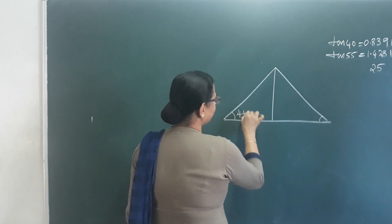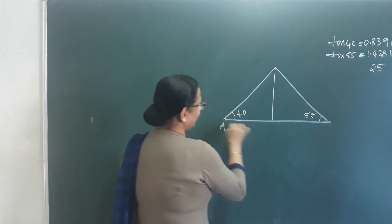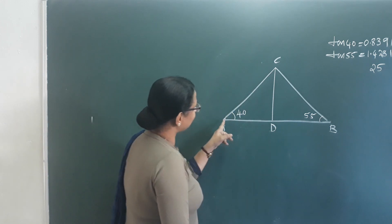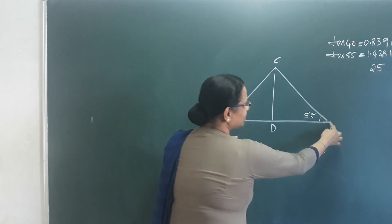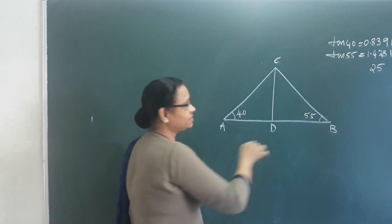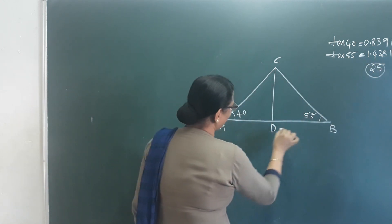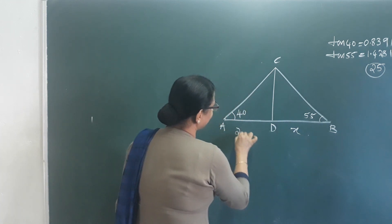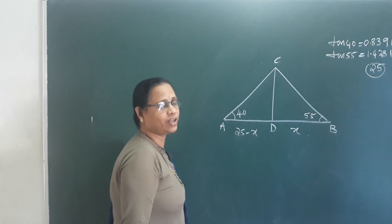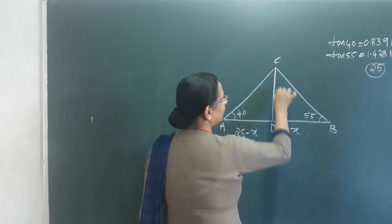One angle is 40 degrees and another angle is 55 degrees. Now I have named points A, B, C, D. These two points are 25 meters apart. Now, if you have one side as X, this is 25 minus X. You can add to 25. This electric post is the height H.